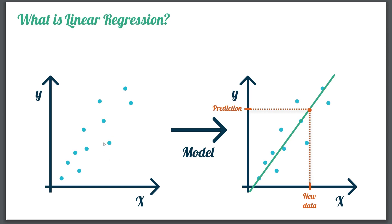Let's start with explaining what linear regression actually is. We have some data points where x is the features and y is the thing we are going to predict. The model is going to find the line which explains these data points the best. Then if we have a new data point, we can go up and read out the prediction from the line. So essentially we are trying to find a line which explains the data.